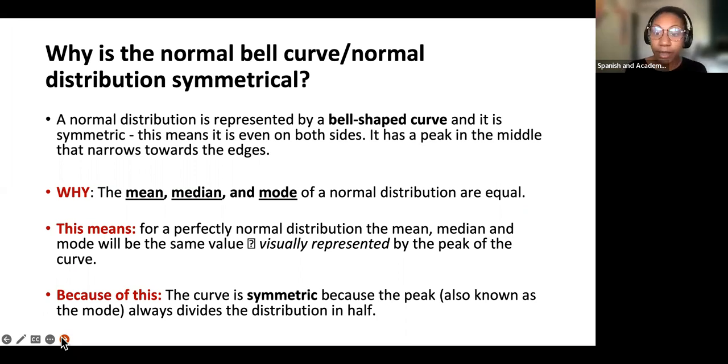This means for a perfectly normal distribution, the mean, median, and mode will have the same value, visually represented by the peak. That question mark should just be an arrow so you're not missing anything there. Because of this, the peak then separates the distribution in half.